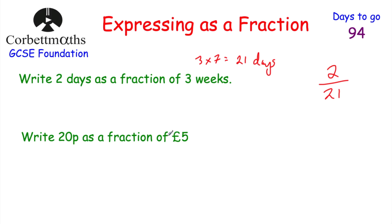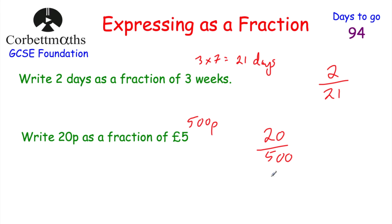Try this one yourself: write 20p as a fraction of five pounds. Five pounds is 500 pence, so we write 20 over 500. Now simplify: divide both by 10 to get 2 over 50, then halve both to get 1 over 25. So 20p as a fraction of five pounds is one twenty-fifth.